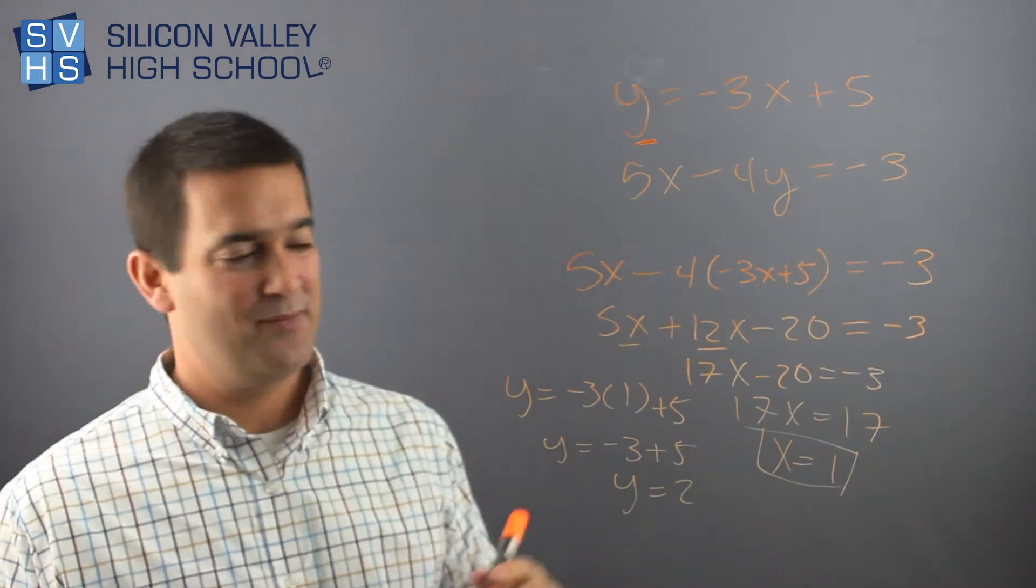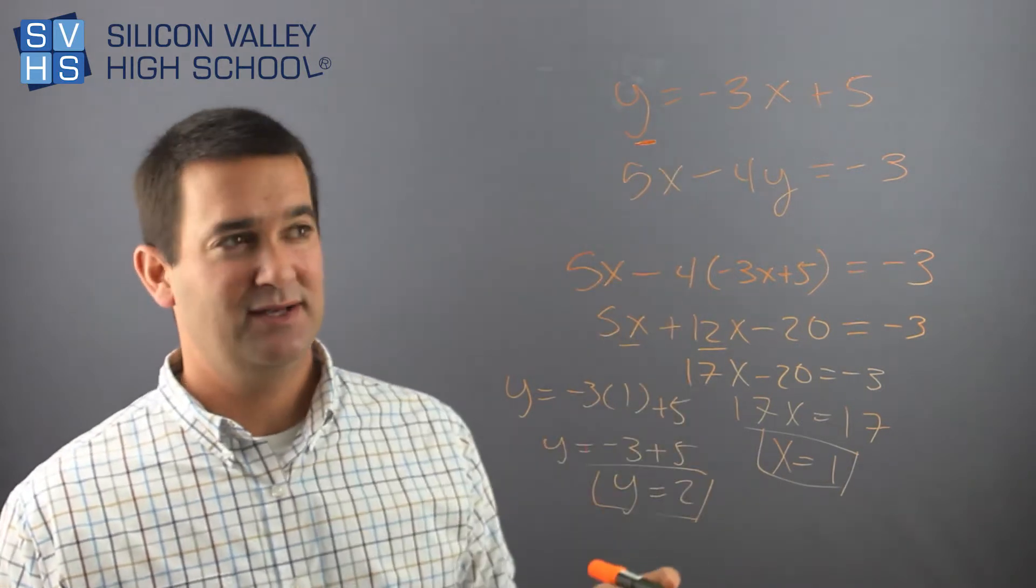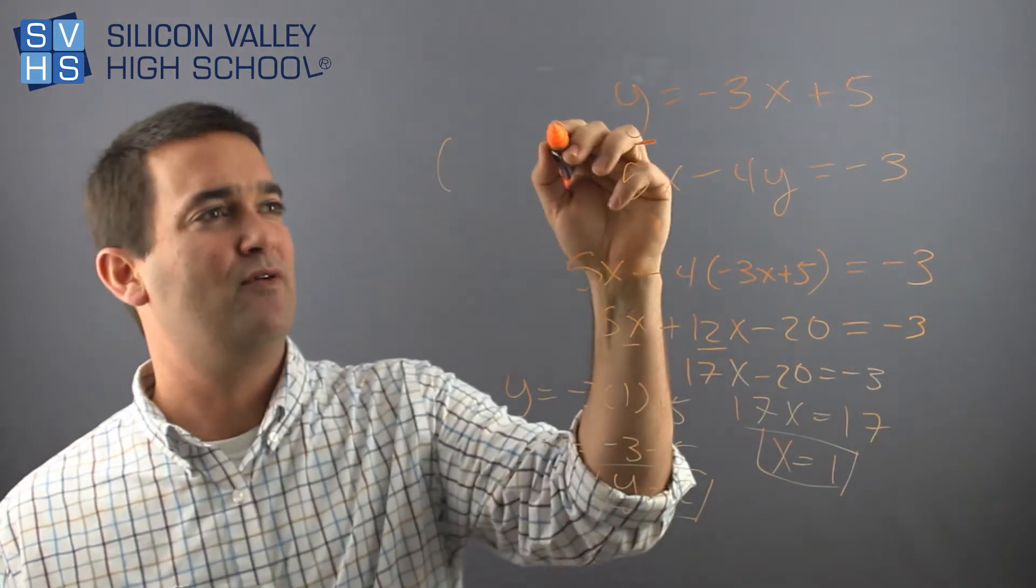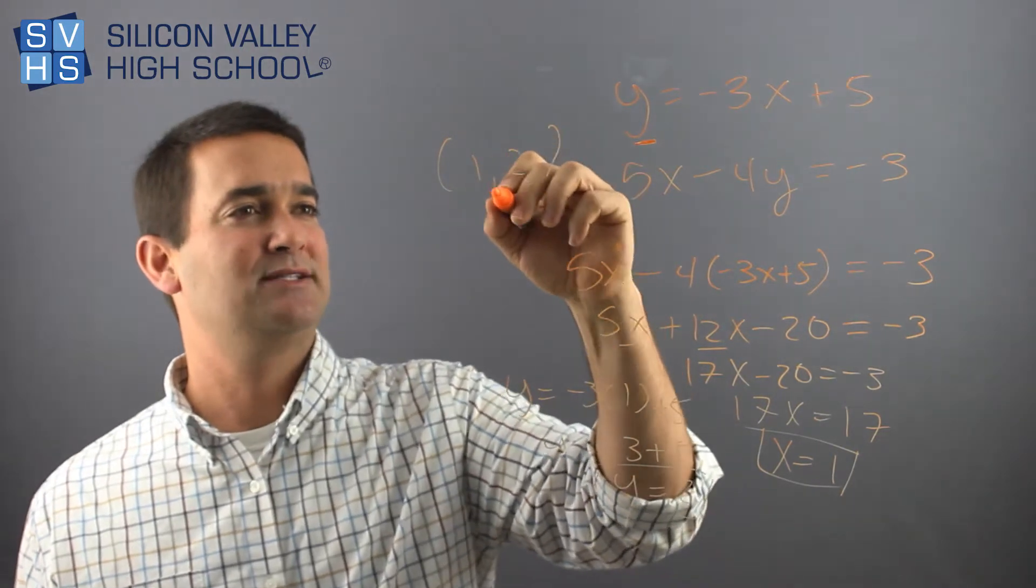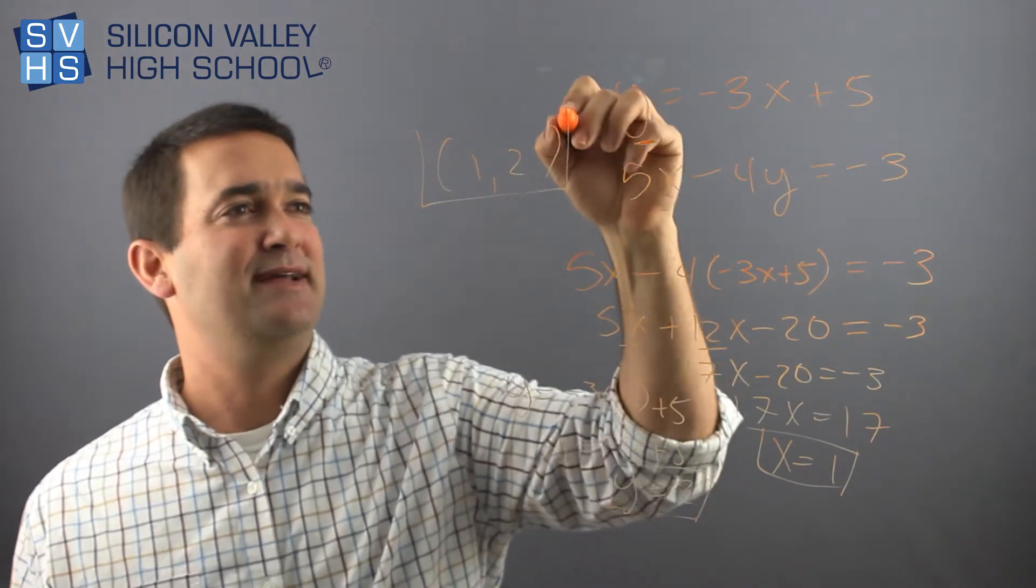And if you recall, this is actually a point. This is where two lines cross and points are written in point form. So my final answer should be 1 comma 2, x comma y. And that is my answer.